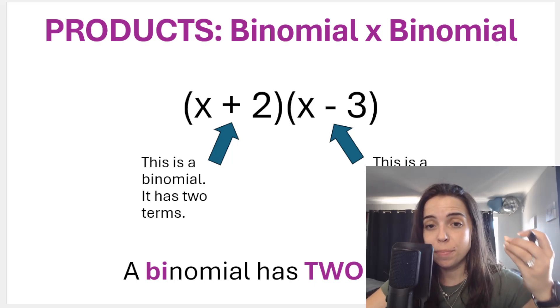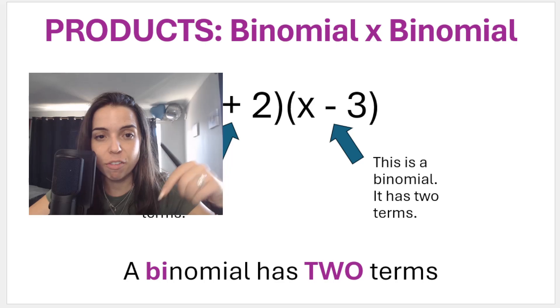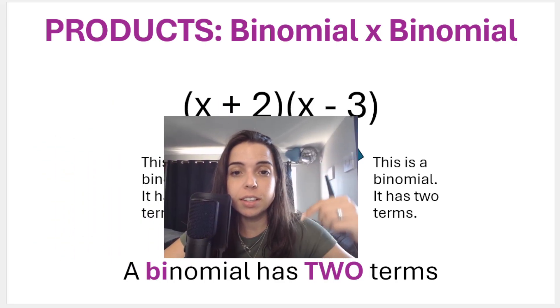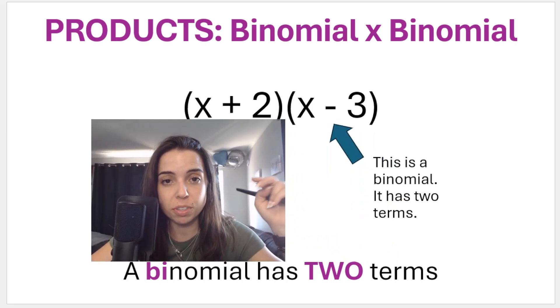Now remember, a binomial has two terms. Think of bi like a bicycle, meaning two. Bicycles have two wheels, binomials have two terms.